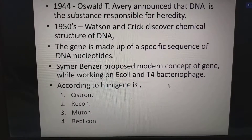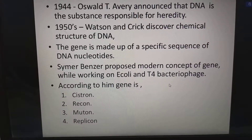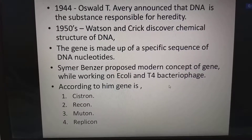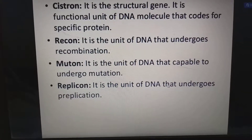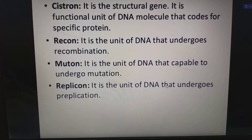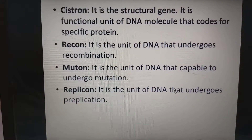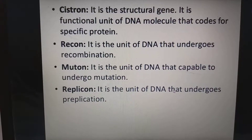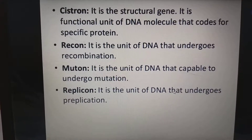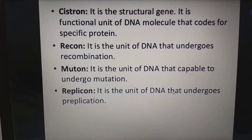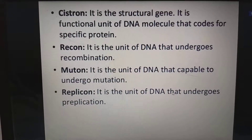Seymour Benzer proposed the modern concept of gene while working on Escherichia coli and T4 bacteriophage. According to him, gene is Cistron, Recon, Muton, and Replicon. Cistron is a structural gene — the functional unit of DNA that codes for a specific protein. Recon is the unit of DNA that undergoes recombination. Muton is the unit of DNA capable of undergoing mutation. Replicon is the unit of DNA that undergoes replication.